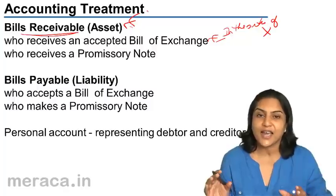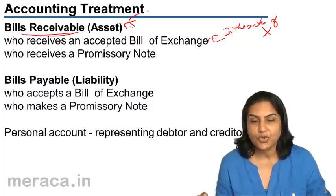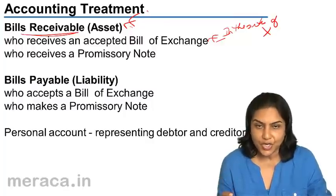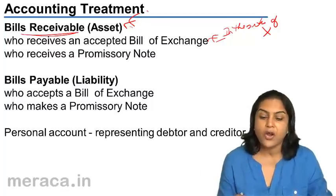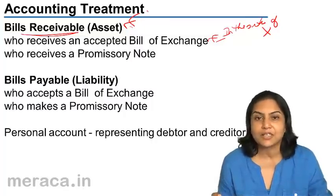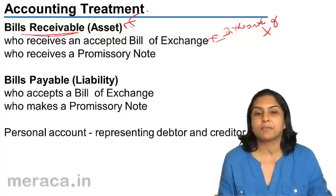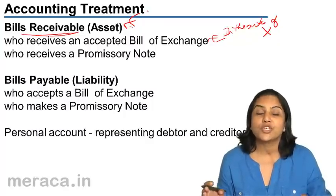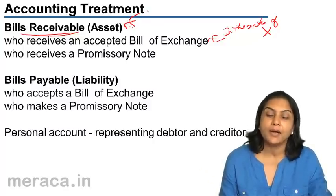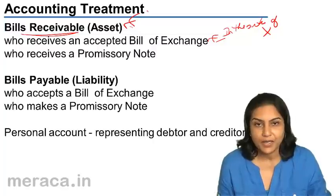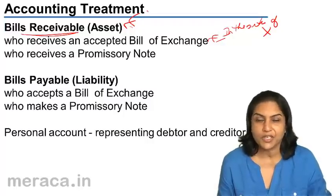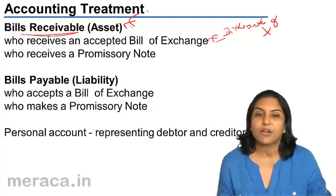What is a current asset? It is an asset which is converted to cash within a short time — within less than a year. So a bill of exchange or a promissory note on which money is to be received would be called bills receivable in the books of the person who is to receive the money. The same document would be called bills payable in the books of the person who has to make the payment.